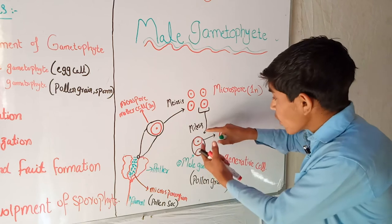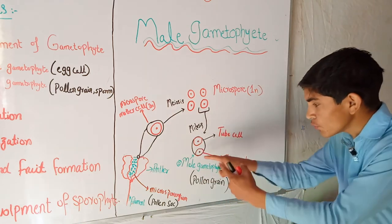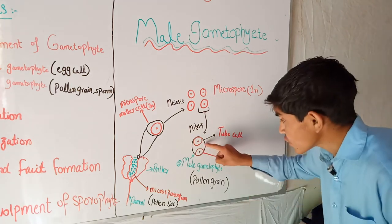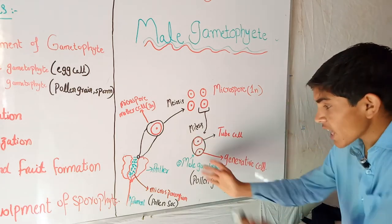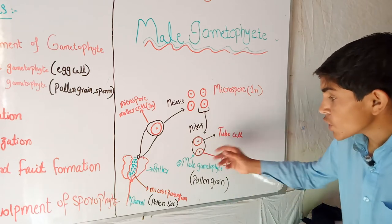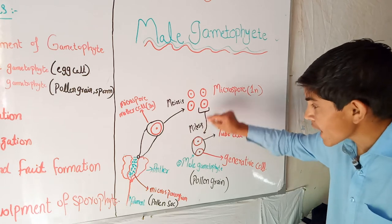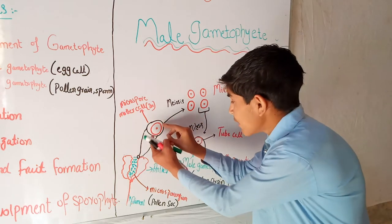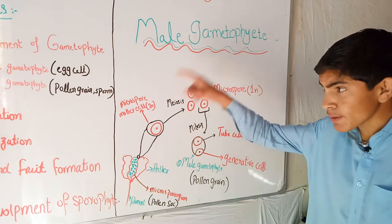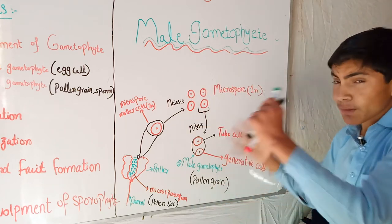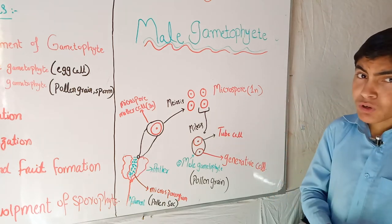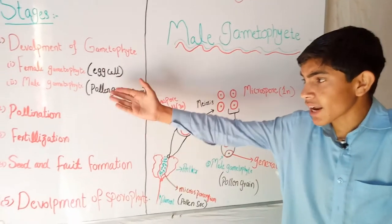The haploid cell divides into two cells by mitosis, but within the same cell structure — karyokinesis occurs but cytokinesis does not occur. So it remains in the same structure: one cell will be the tube cell and the second will be the generative cell, within the same cell structure. This structure is called the pollen grain, and we call it the male gametophyte. The male gametophyte is haploid and the female gametophyte was also haploid, so when haploid and haploid fuse, they lead to the production of a diploid cell.